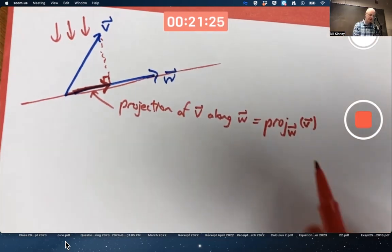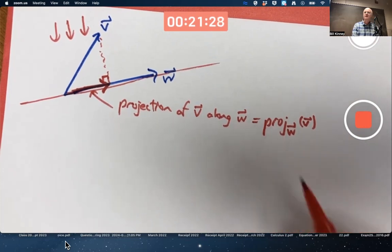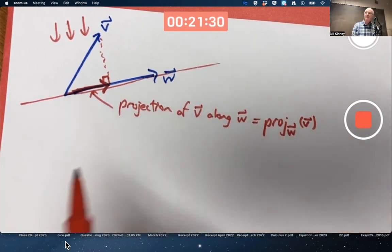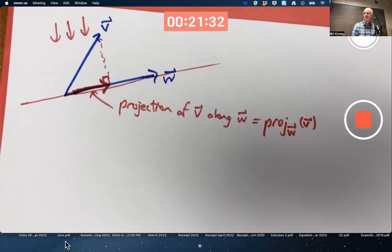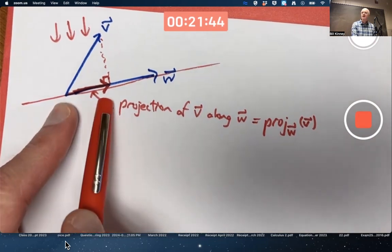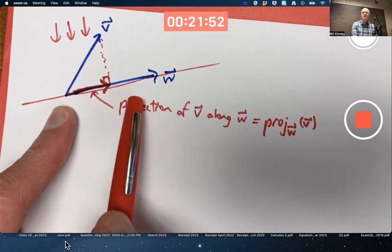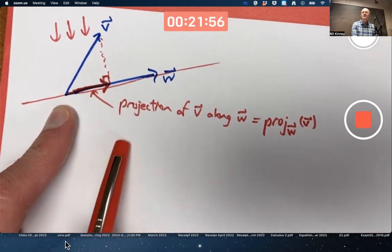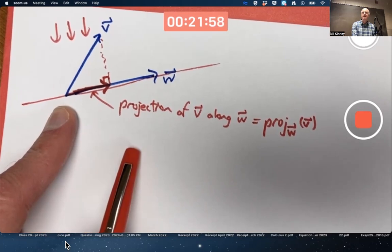It's kind of like function notation here. Projection of V along W is a vector, not a scalar. Sometimes people think of projections as scalars, in which case it'd be effectively the length of this vector. But I'd be more likely, and textbooks would be more likely to call that the component of V along W. Projection is a vector.